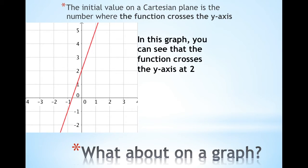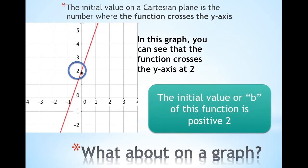In this graph you can see that the function crosses the y-axis at the number 2. So the initial value or B of this function is a positive 2. Very simply.